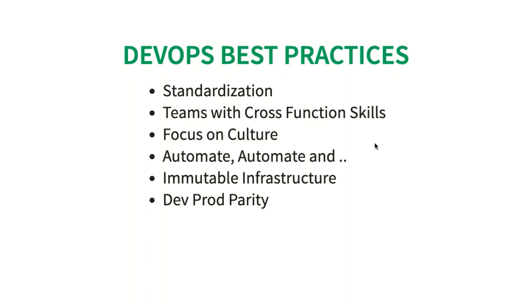Dev-prod parity is another important DevOps best practice. You want the dev and production environments to be as similar as possible — created the same way, deployed to the same way, and monitored the same way. This ensures that any problems you might find in production are found early. You don't need to wait until a production stage to find problems if dev and production environments are similar.